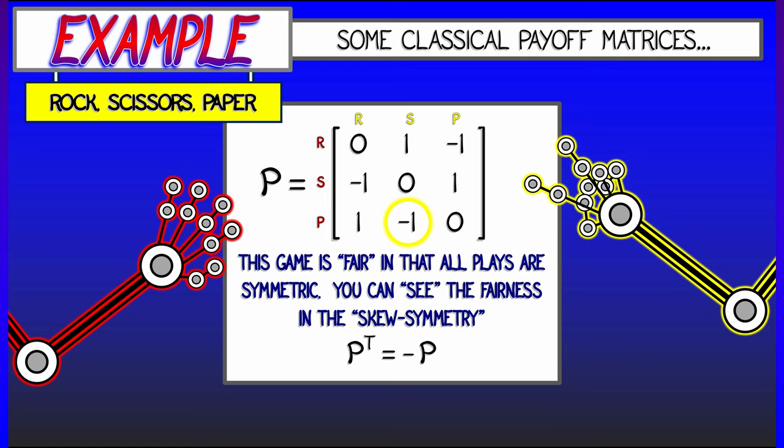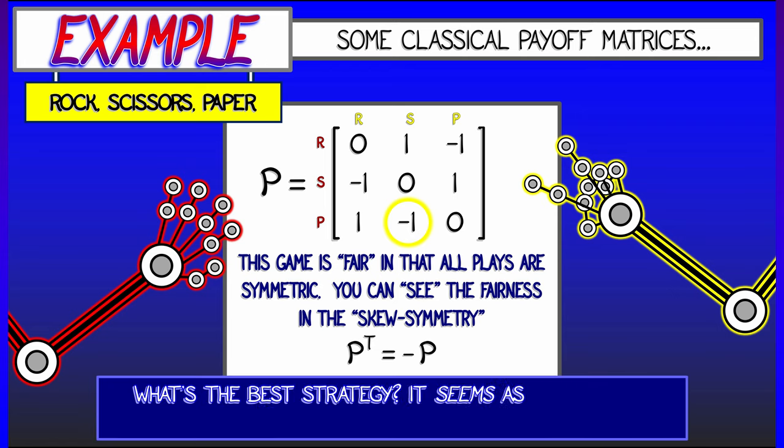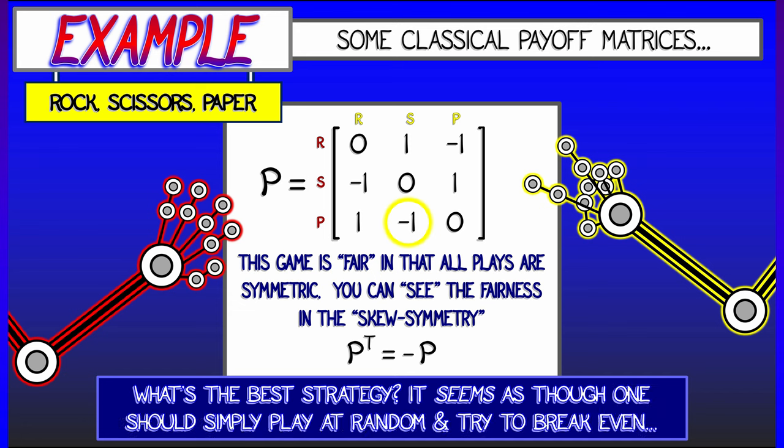Now, in this case, what do you do? What's the strategy? Well, it seems as though everything is sort of perfectly fair, that you should just try to pick something at random and hope that you break even. Can you do better than that?